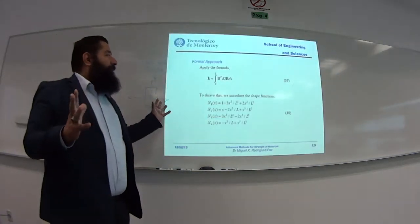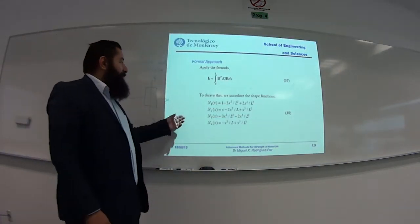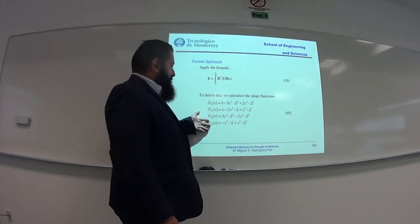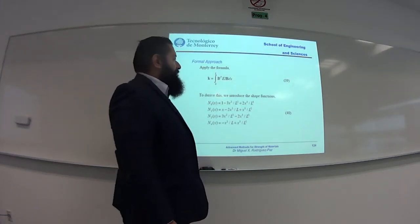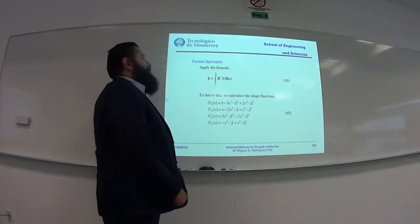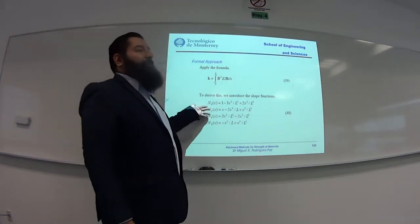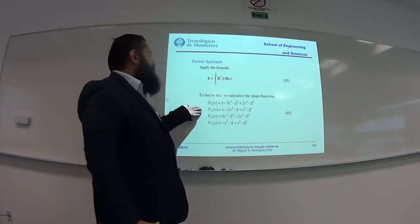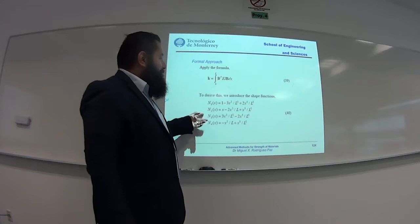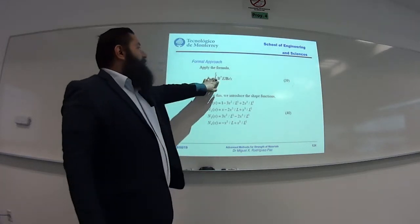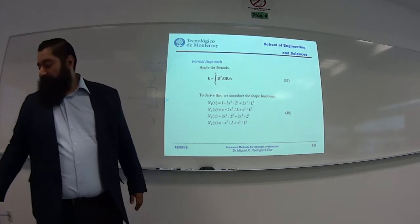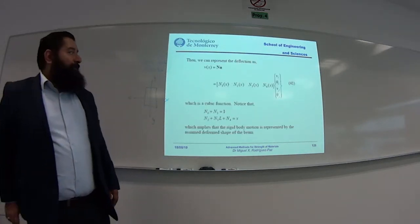There we go — there are four shape functions; they are polynomials of x and they are proposed as the functions representing the field of vertical displacement and also the rotation. Applying the standard formula, we should arrive at the same stiffness matrix.